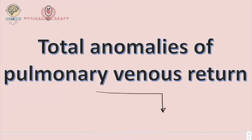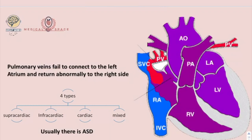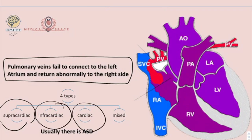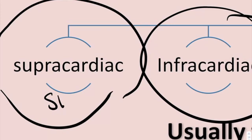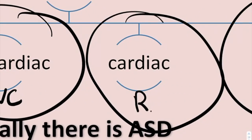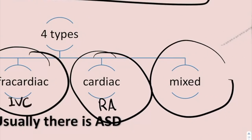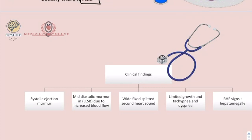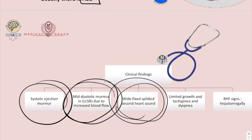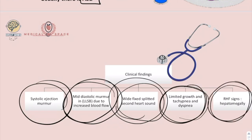In Total Anomalous Pulmonary Venous Return (TAPVR), the pulmonary veins fail to connect to the left atrium and return abnormally to the right side. The return can be supracardiac — to the superior vena cava; infracardiac — to the inferior vena cava; cardiac — directly to the right atrium; or mixed type. These patients usually also have an atrial septal defect. Clinical findings include systolic ejection murmur, mid-diastolic murmur at the left lower sternal border due to increased blood flow, wide fixed splitting of the second heart sound, limited growth, tachypnea, dyspnea, and right-sided heart failure such as hepatomegaly.